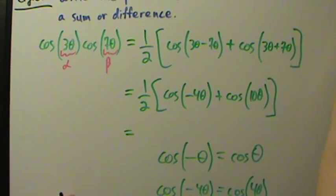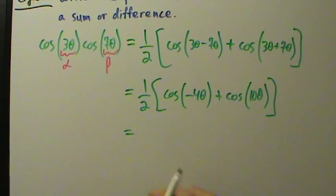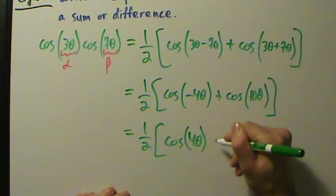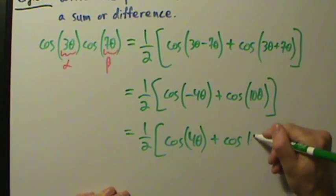So then this equals 1/2 open bracket, cosine of 4θ, and then plus cosine of 10θ.